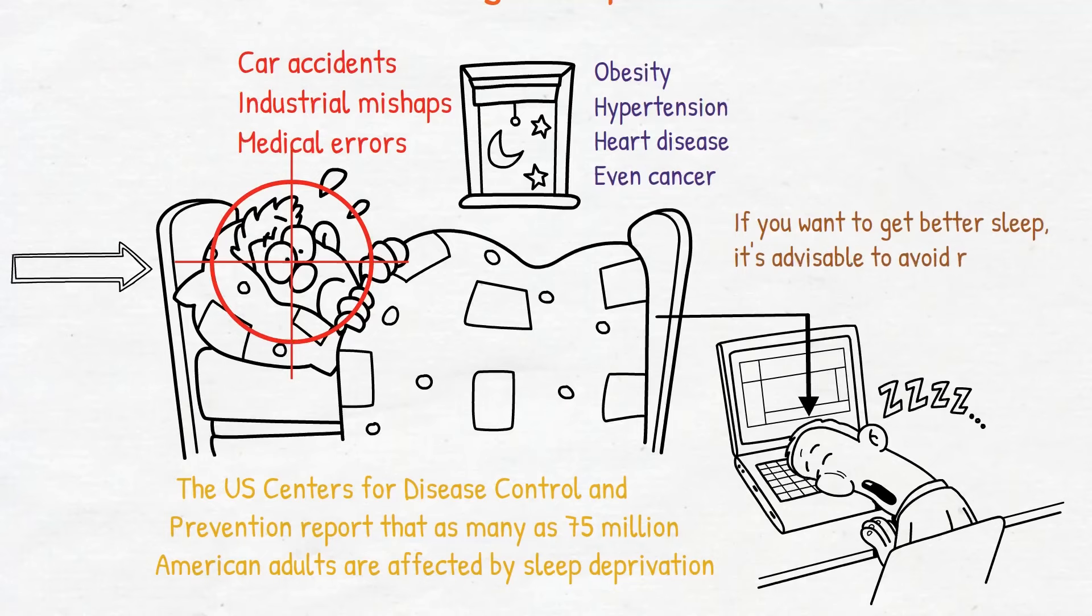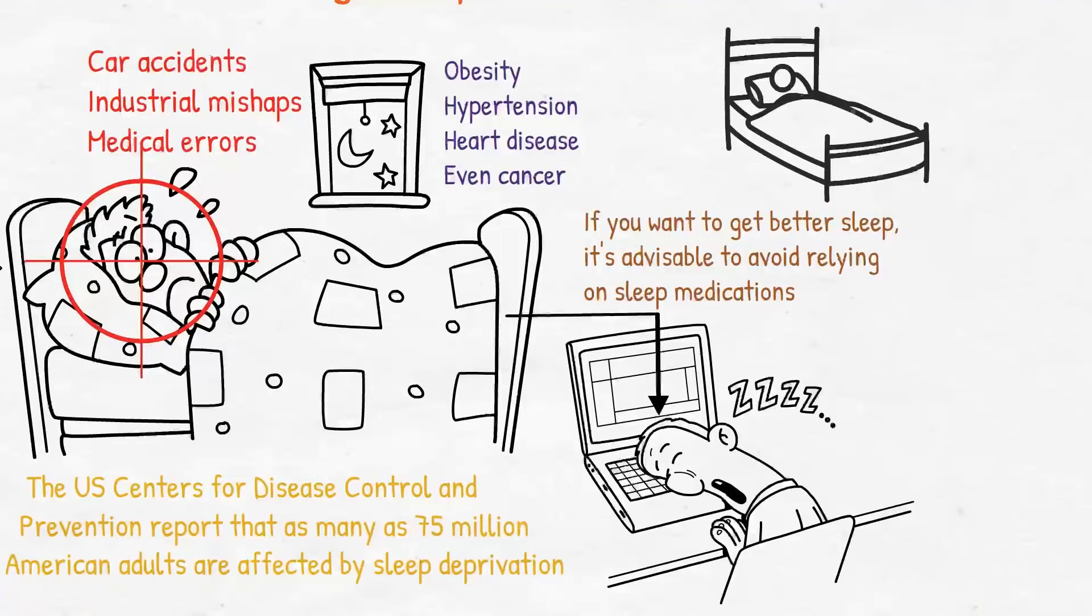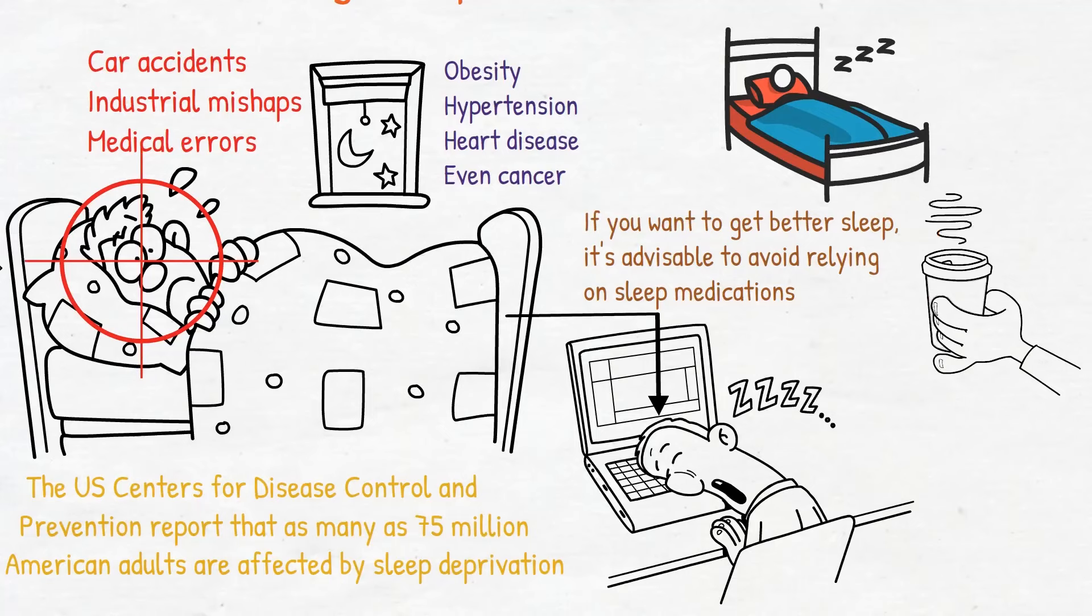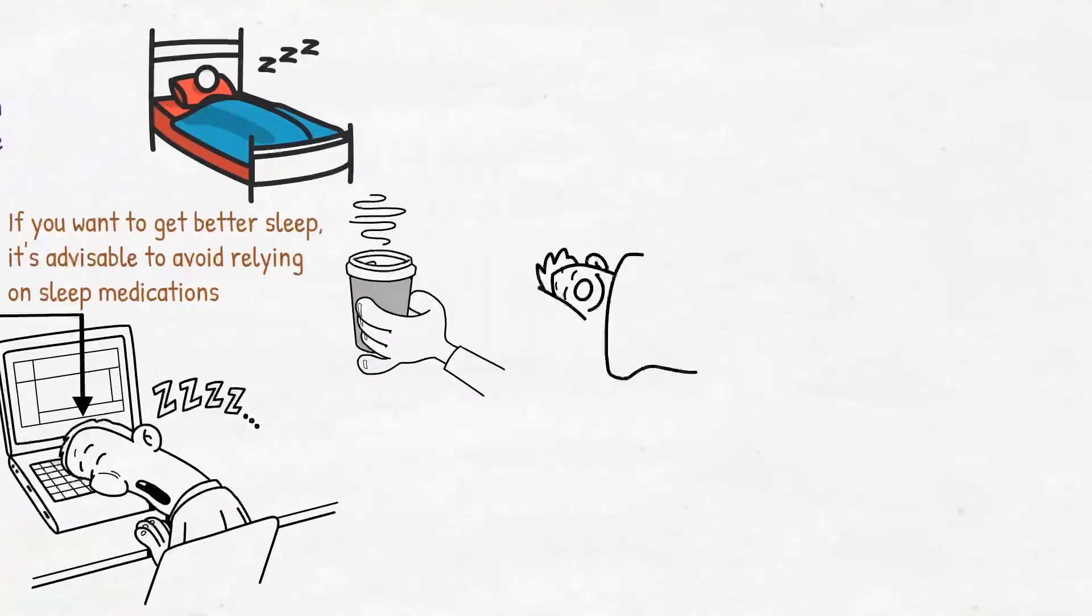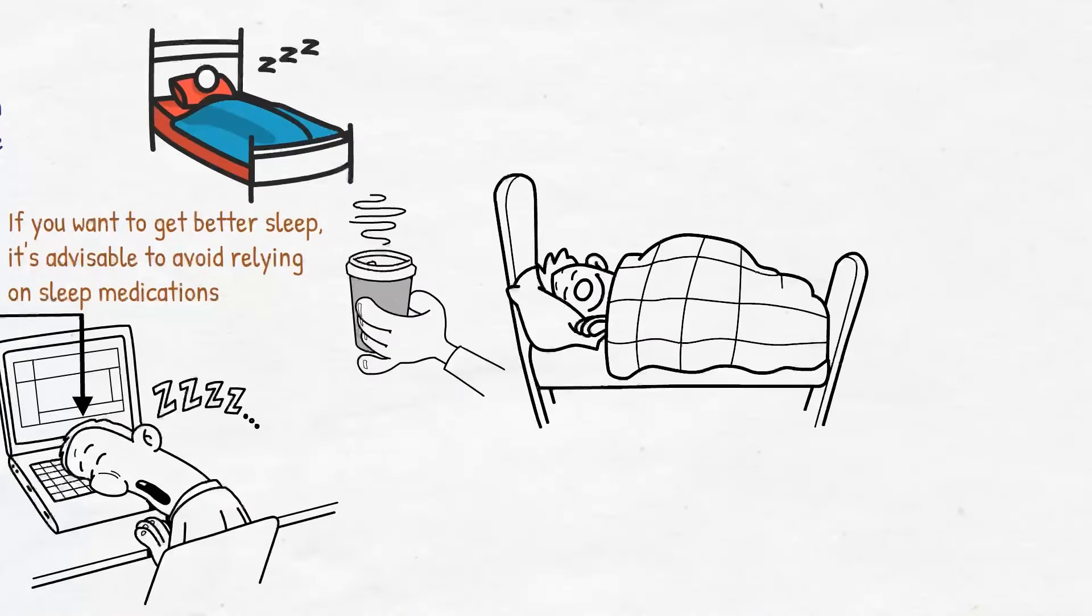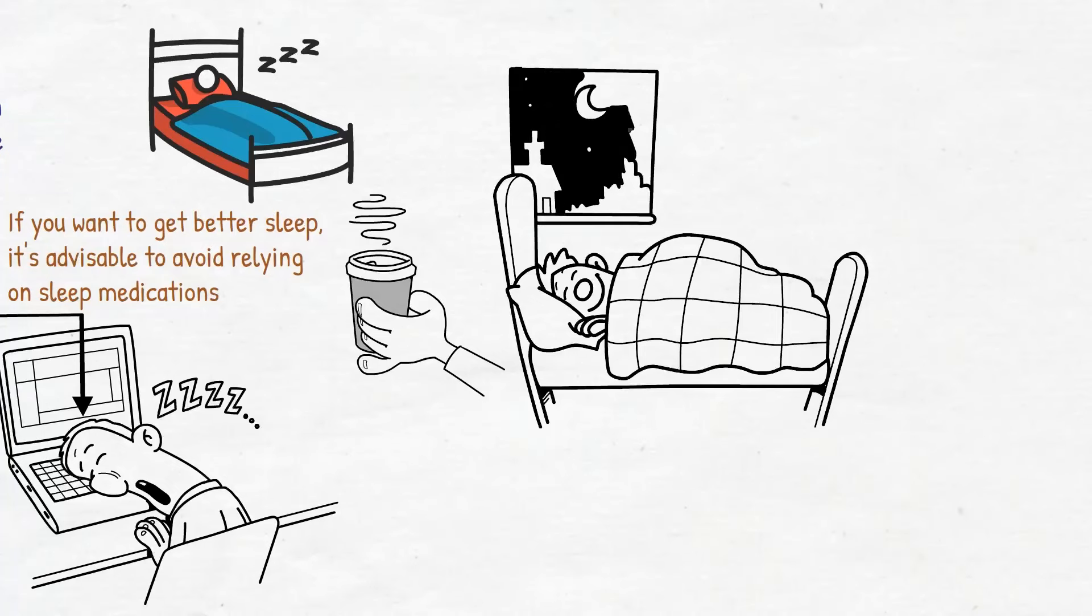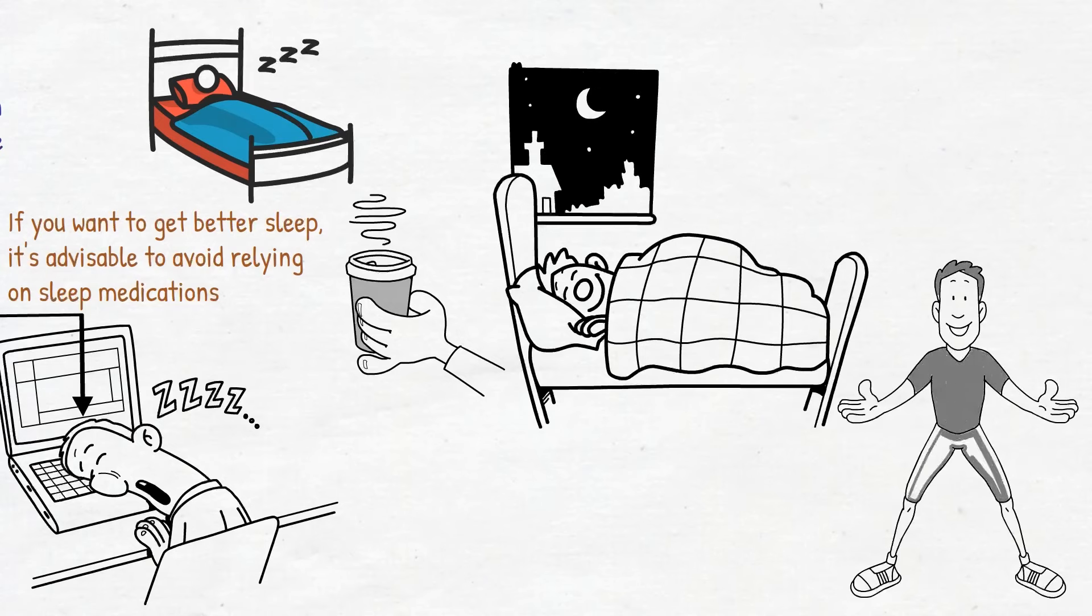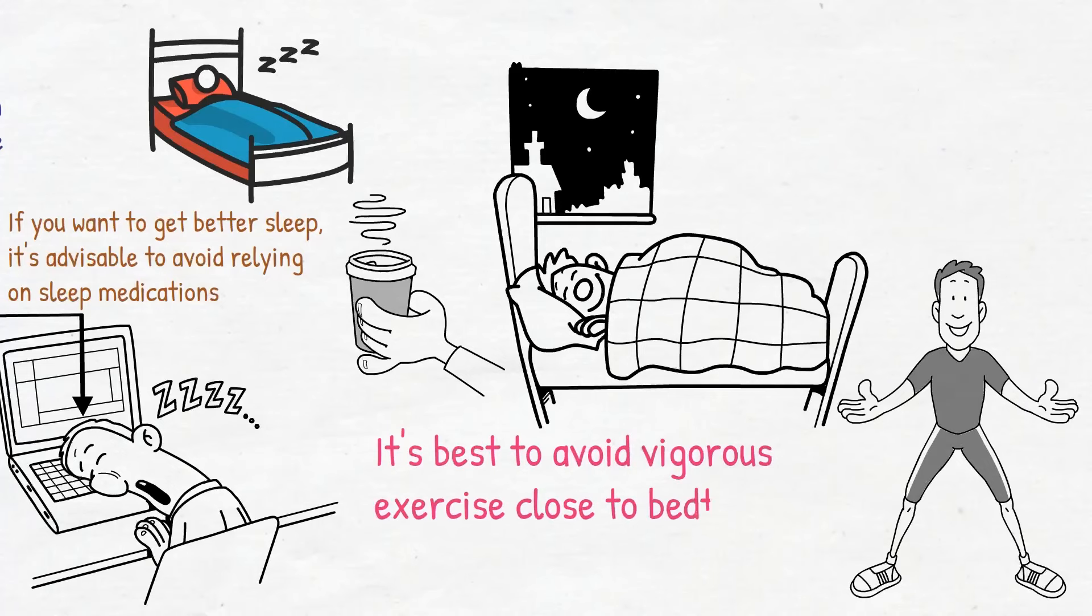So if you want to get better sleep, it's advisable to avoid relying on sleep medications. Watching television in bed should be avoided, and creating a dark, quiet environment in the bedroom can be beneficial. It's also recommended to refrain from consuming alcohol or caffeine at least two hours before bedtime. Additionally, establishing a regular sleep schedule, ensuring a comfortable sleeping environment, and engaging in relaxing activities before bed can further enhance sleep quality. Regular physical activity during the day can also promote better sleep, but it's best to avoid vigorous exercise close to bedtime.